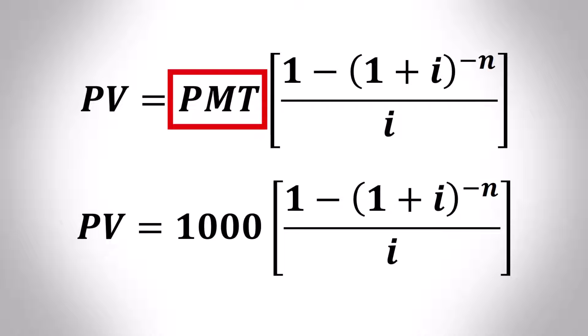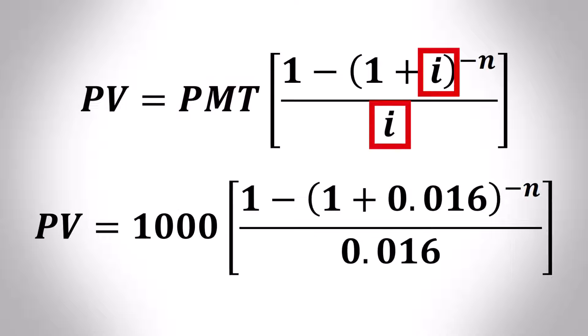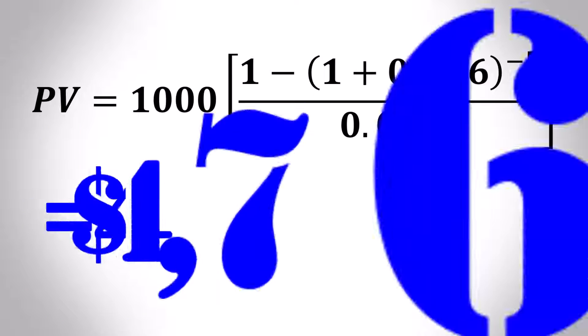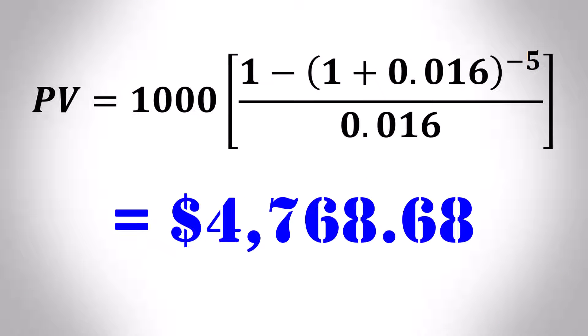Substituting 1,000 in for PMT, 0.016 in for I, and 5 in for N, we find that the present value of this loan is actually $4,768.68.